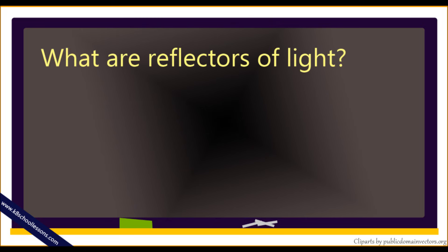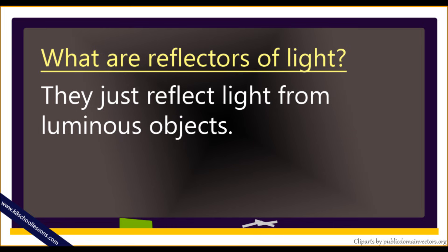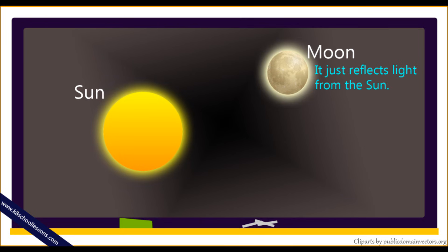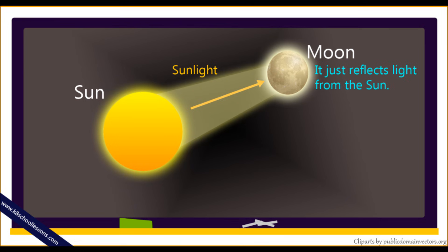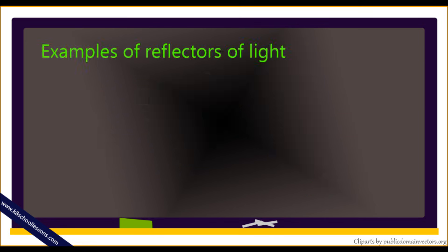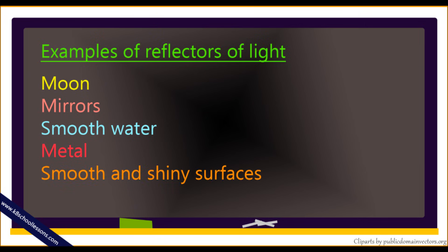What are reflectors of light? Reflectors of light cannot emit their own light. They just reflect light from luminous objects. For example, the moon doesn't emit its own light, but it shines brightly at night because it takes sunlight during the daytime and reflects it at night. So we who are on Earth see this reflected sunlight from the moon at night. Examples of reflectors of light include the moon, mirrors, smooth water, metal, and smooth and shiny surfaces.